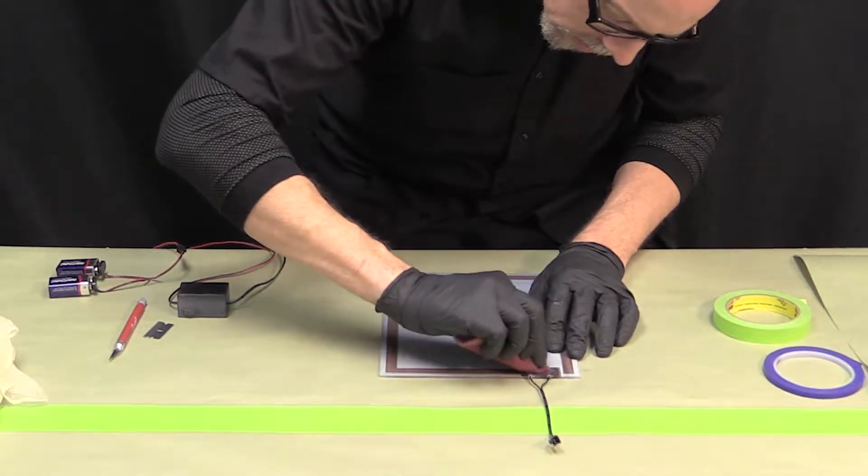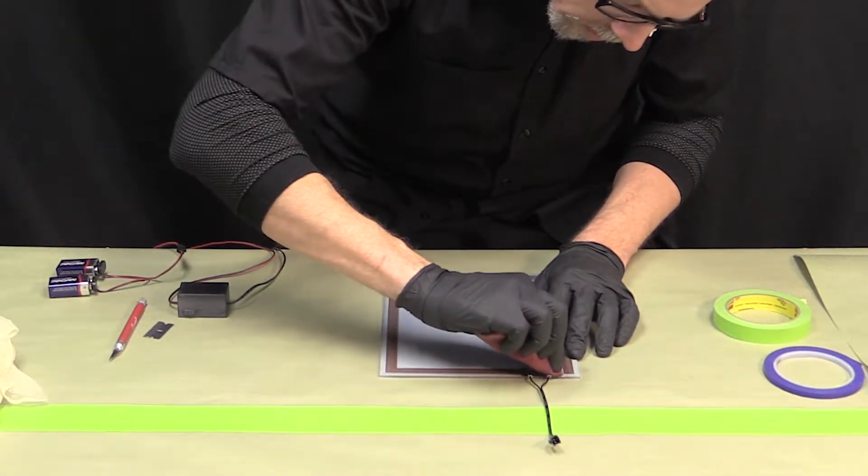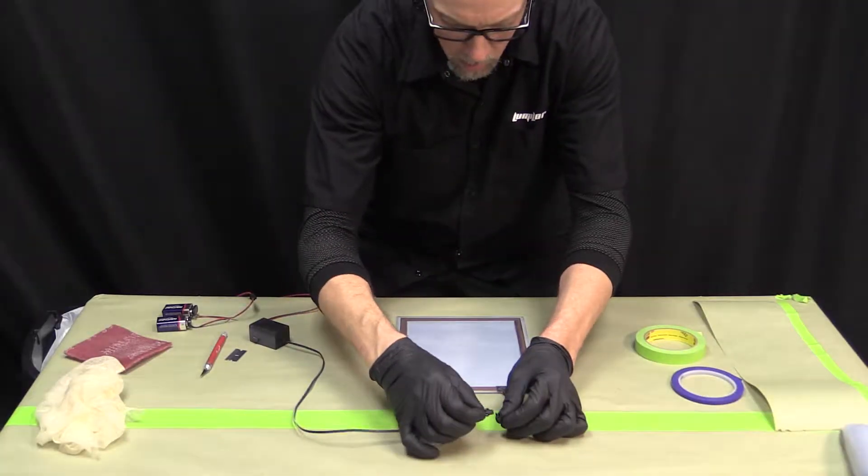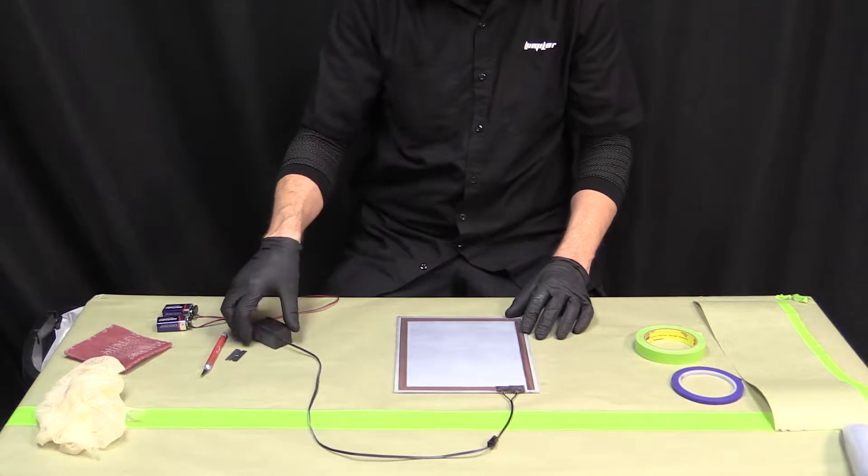Start by scuffing the JB weld that was previously applied and wipe clean with the tack rag. Make sure the inverter is plugged into the panel and simply turn to the on position.